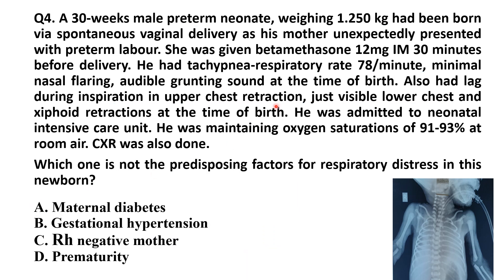In the same clinical stem, another question asks: which one is NOT a predisposing factor for respiratory distress in this newborn? We know this premature neonate with respiratory distress and characteristic x-ray changes has RDS — respiratory distress syndrome. Option A, maternal diabetes, is a predisposing factor. Gestational hypertension is NOT a predisposing factor, while RH-negative mother and prematurity are risk factors. So the right answer is option B.